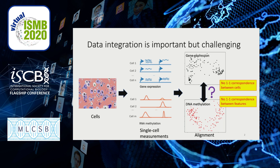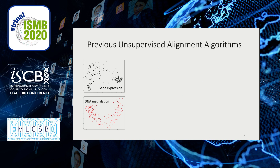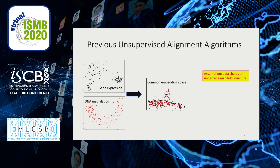What you want to do is find a way to bring these two datasets together. But it's a really challenging problem because we don't have one-to-one correspondence between the cells or the features. People have worked on this before, and generally they're working under the underlying assumption that our data shares an underlying manifold structure, meaning there is a meaningful way to align these two datasets. A lot of the current methods rely on some sort of joint alignment and dimension reduction algorithm that brings both datasets down into a common embedding space. Two common versions right now are MMDMA and UnionCom, which both take this approach.